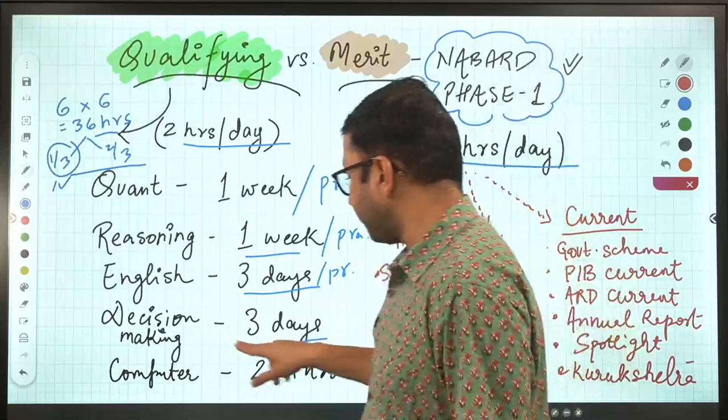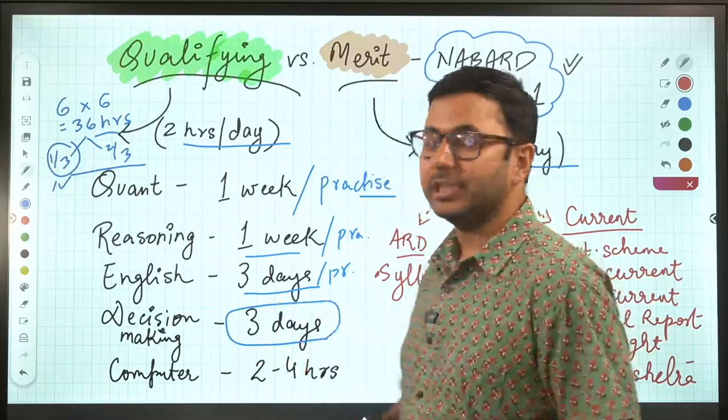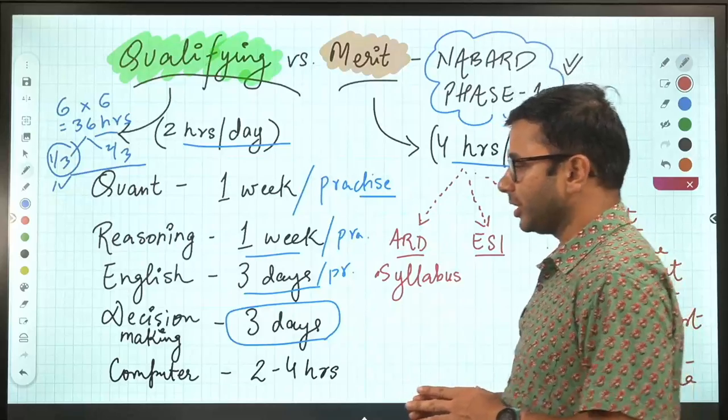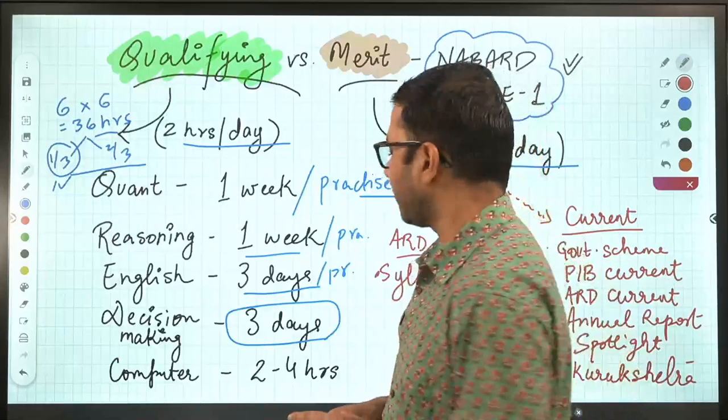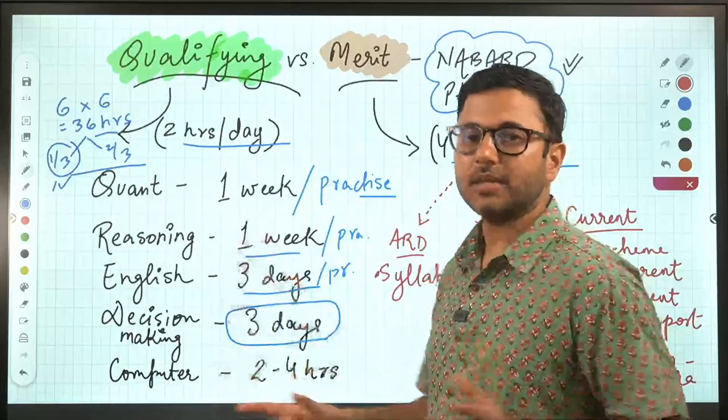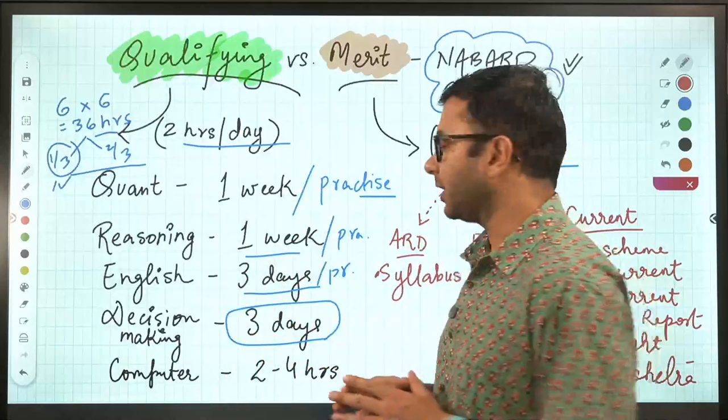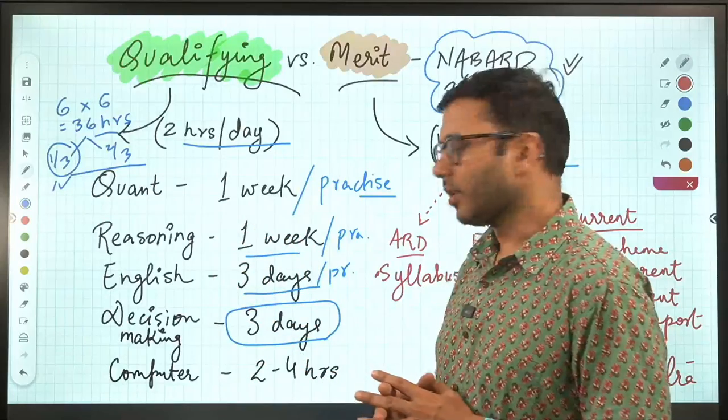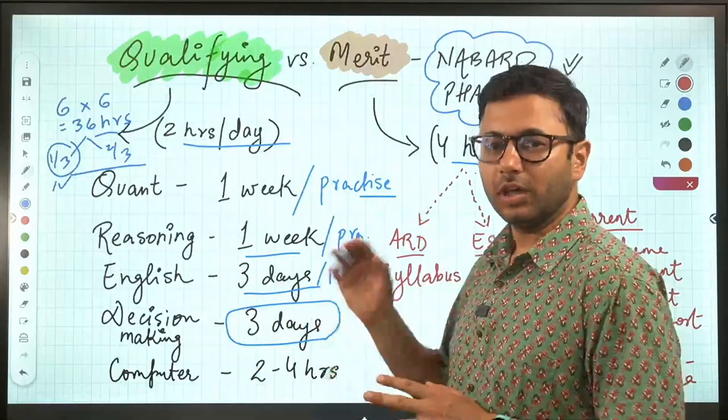Decision making can be an Achilles heel, can be difficult in the upcoming examination. That's why Chetan sir will be taking some sessions. You can spend a maximum of three days on decision making because there is no end to what you can and cannot cover in decision making. If you start covering everything, you might end up spending more than a week on it. You have to limit yourself.